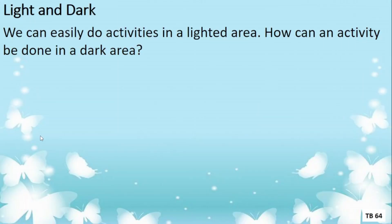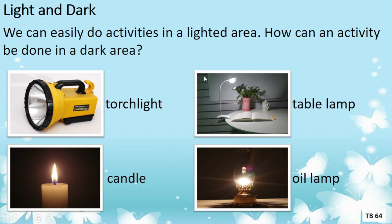Now we come to our second topic: light and dark. We can easily do activities in a lighted area — reading, doing homework, playing, or even having meals. But what about if there is not enough light or it is totally dark? You can use sources of light such as a torch light from a lamp.